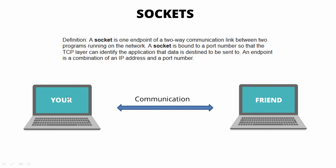You have one computer — let's say it is your computer — and then you have a friend's computer. To communicate between both of them, you have to create a socket, and that socket has to be bound to an IP address and a port number. This socket is then able to send information to your friend's computer, and vice versa — it is also able to receive communication or a message from the other computer.